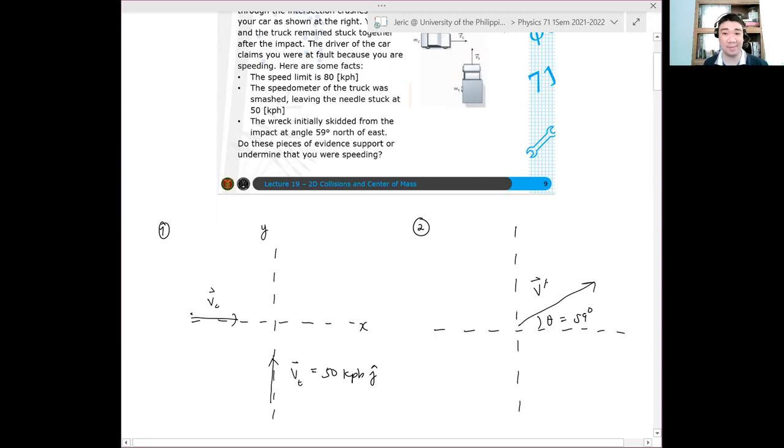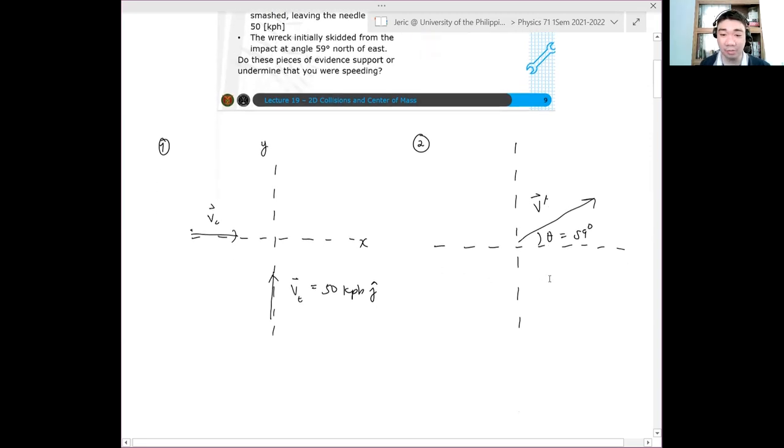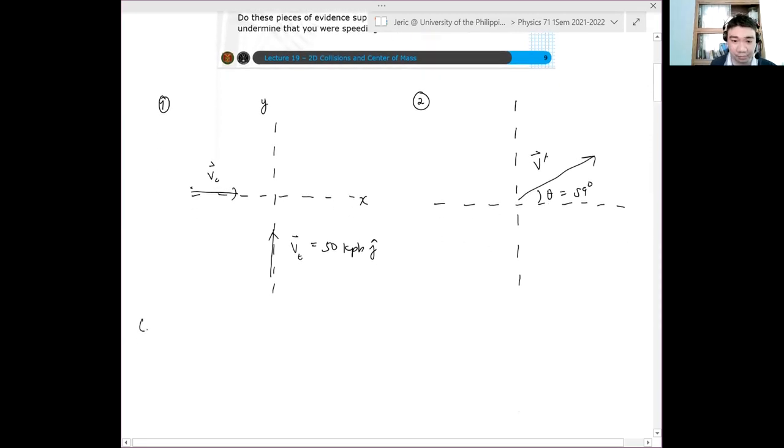Now, these are all vectors. Remember? All vectors. Now, the question now is, what is vc? This is what we need. What is the velocity? What is your speed before the collision? Because the truck driver is claiming that you were over speeding. That's why you should be at fault for this collision.